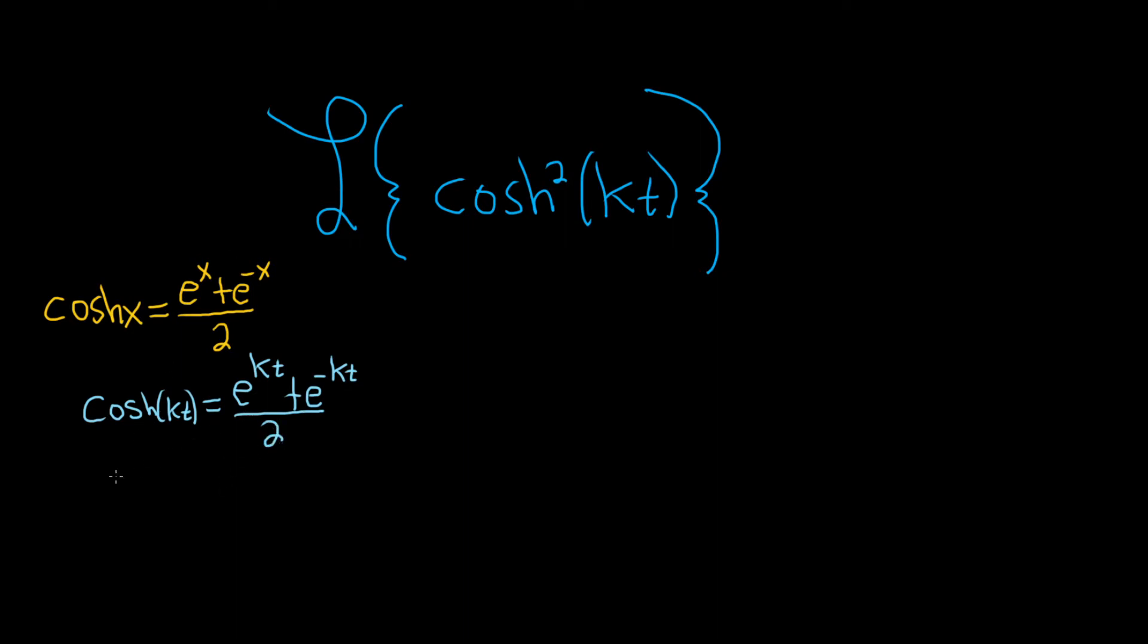All right, so now we have to square this. So if we square this side and we square this side, well, we can square the 2 and pull out a one-fourth because 2 squared is 4. We can write it like this: e to the kt plus e to the negative kt, and then this piece here is squared.